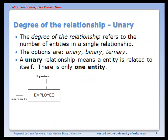Another concept is the degree of the relationship, and there are three options: unary, binary, and ternary. A unary relationship means an entity is related to itself — there is only one entity involved in the relationship.